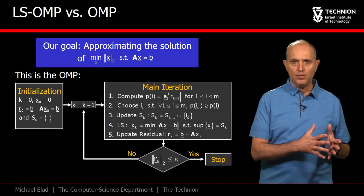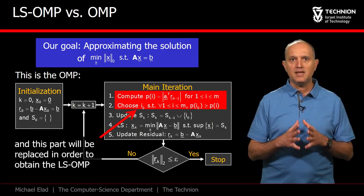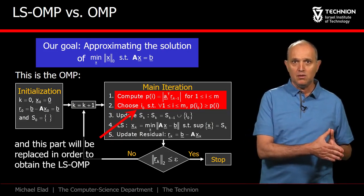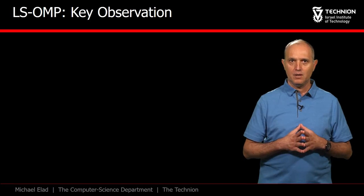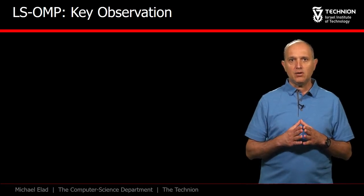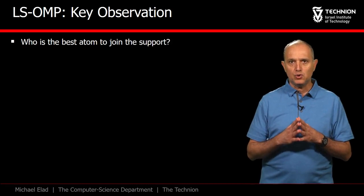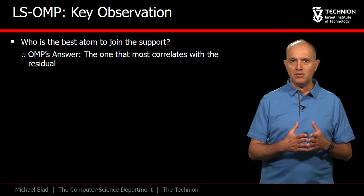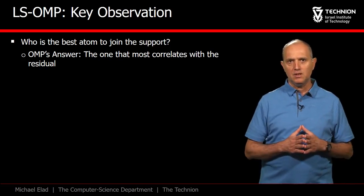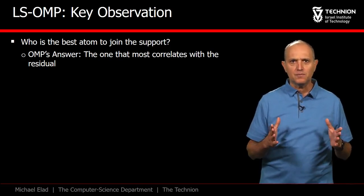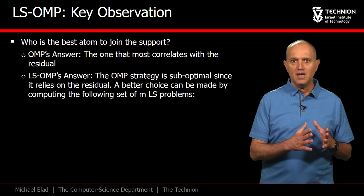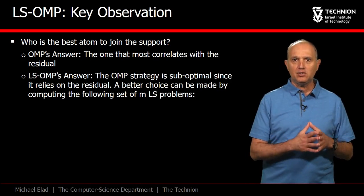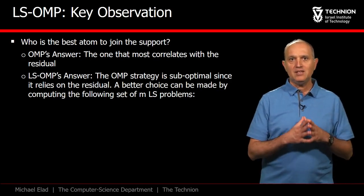Starting with the OMP, the main modification is in the way we choose the next atom. While OMP relies on the residual r_{k-1}, we should operate differently. Who is the best atom to join the support? OMP answered this by suggesting the atom that best correlates with the current residual. Least Squares OMP says: I do not know — and therefore, let's simply check each and every one, add it to the support, check the error it leads to, and then decide.